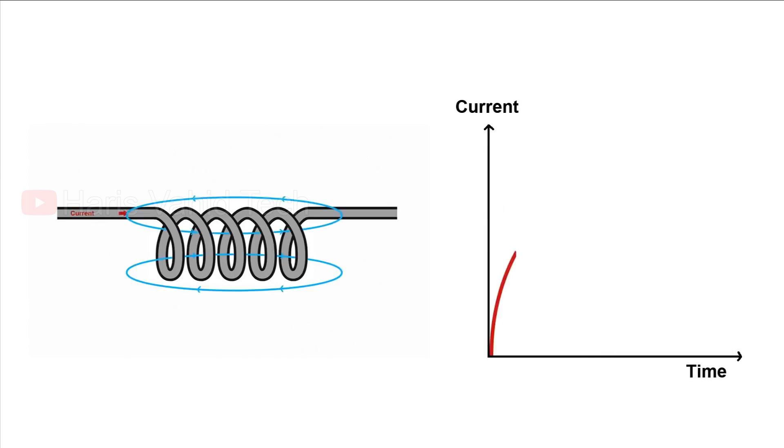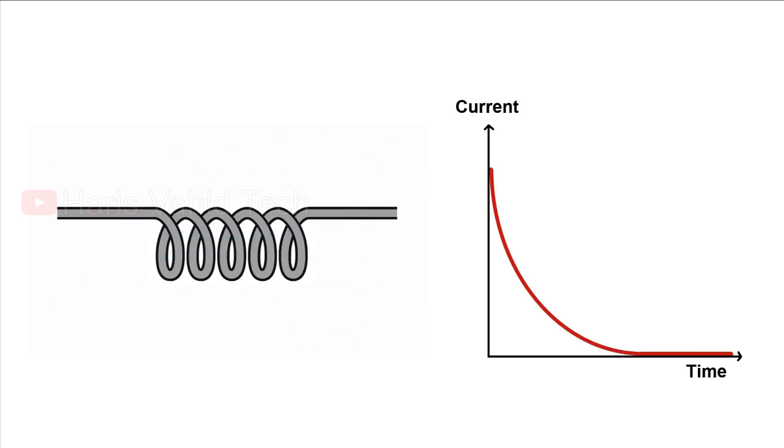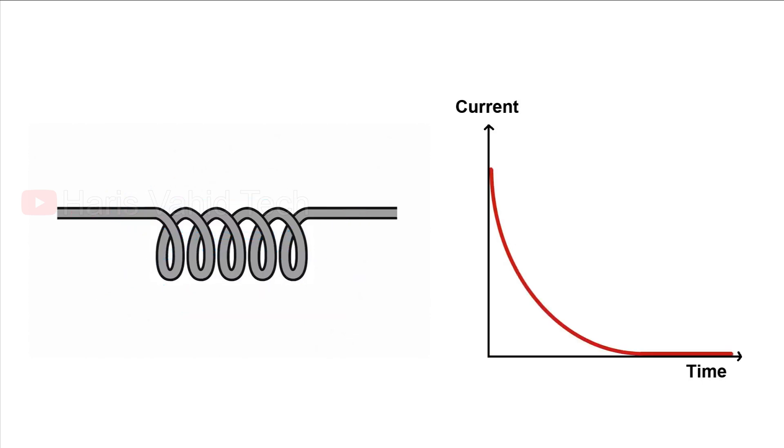You know how a capacitor stores energy in the form of a static charge and resists sudden changes in the voltage. Well, inductors are very similar. They store energy in the form of magnetic field and resist sudden changes in the current. Remember one thing, the current in the inductor cannot instantly change. It always takes a certain amount of time.